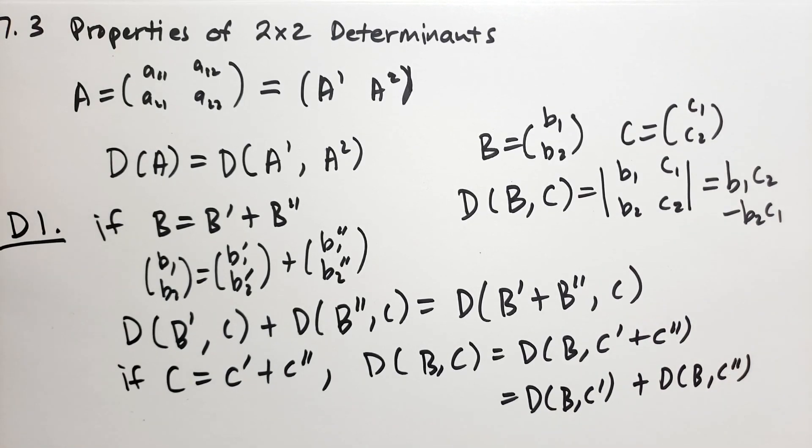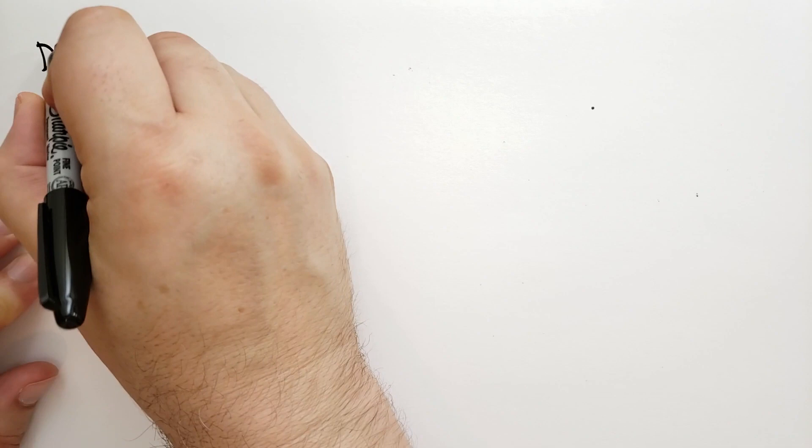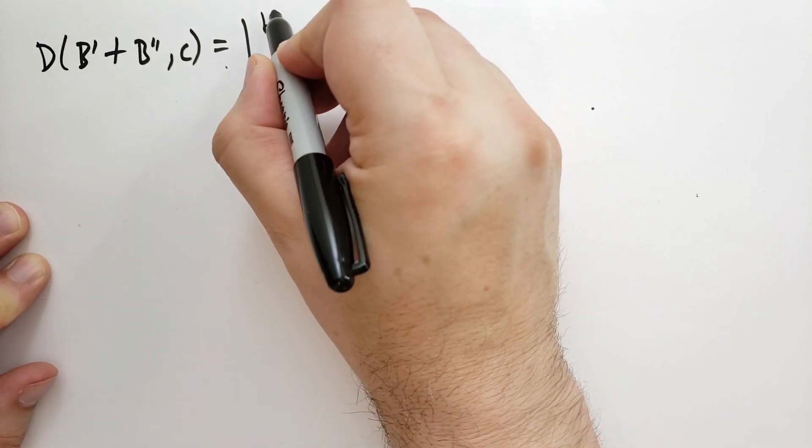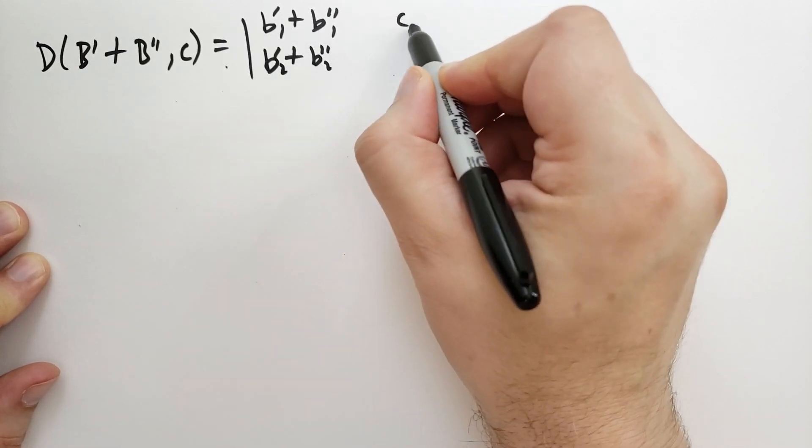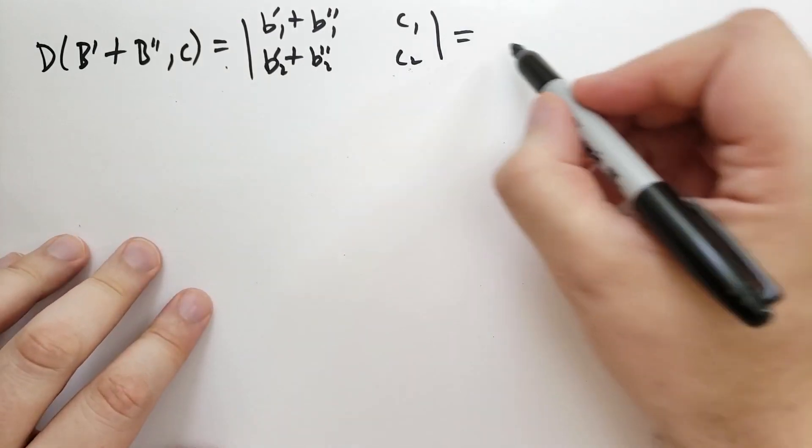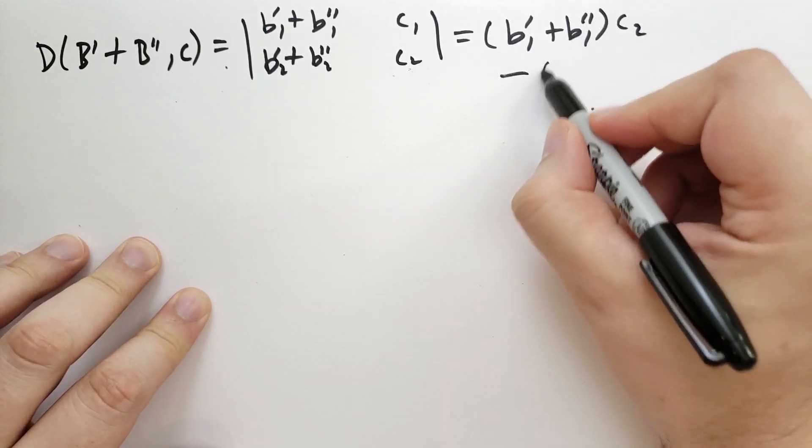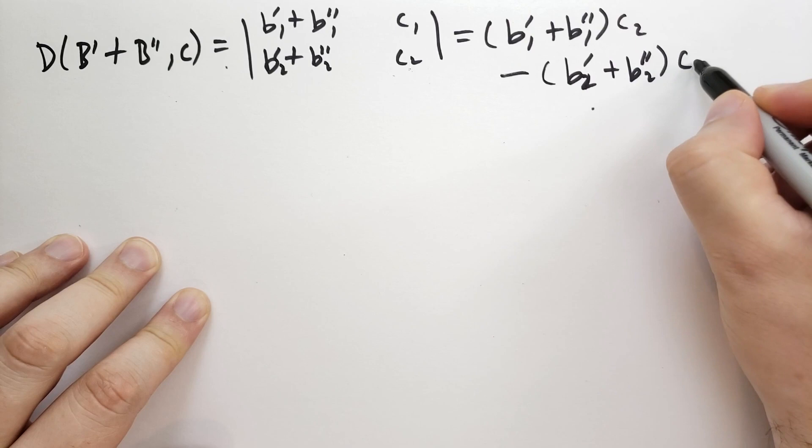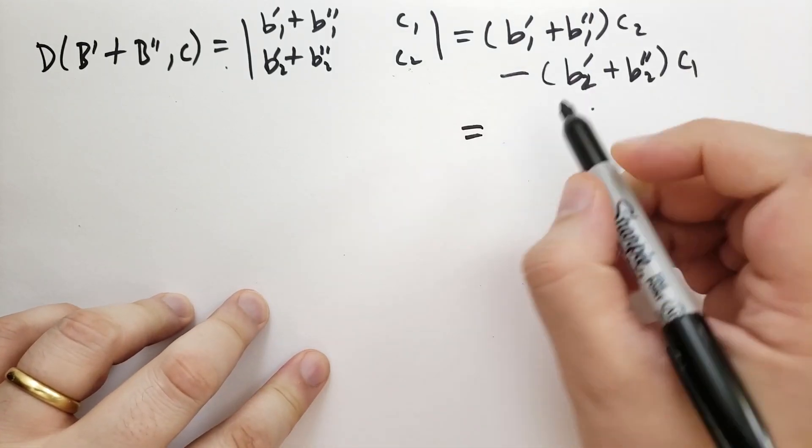Then the determinant of B' and C plus the determinant of B'' and C is the same as the determinant of B' plus B'' and C. So this is kind of a distribution law. We're taking a sum of two column vectors, and we're getting two determinants out of it. We can also do this for C. So also if C is equal to C' plus C'', then the determinant of B and C is the same as the determinant of B and C' plus C'', which is the same as the determinant of B and C' plus the determinant of B and C''.